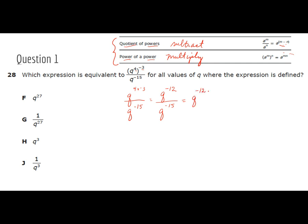Negative 12 minus negative 15. Now make a big deal out of the minus the negative. But friends, you can put this straight in your calculator. Type negative 12 minus negative 15. Or you can change that subtraction to an addition and change the sign of the next number, and that becomes negative 12 plus 15. That will give us q to the 3rd, or answer choice h here.